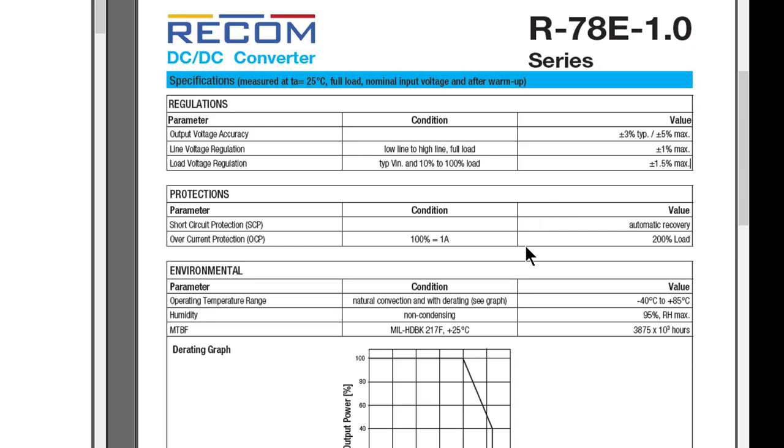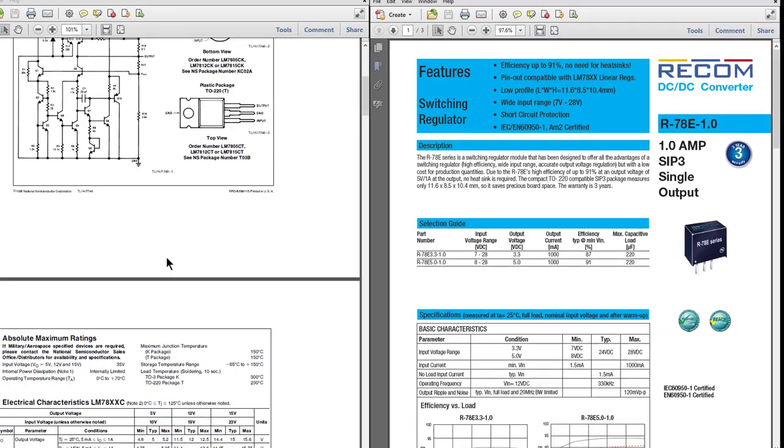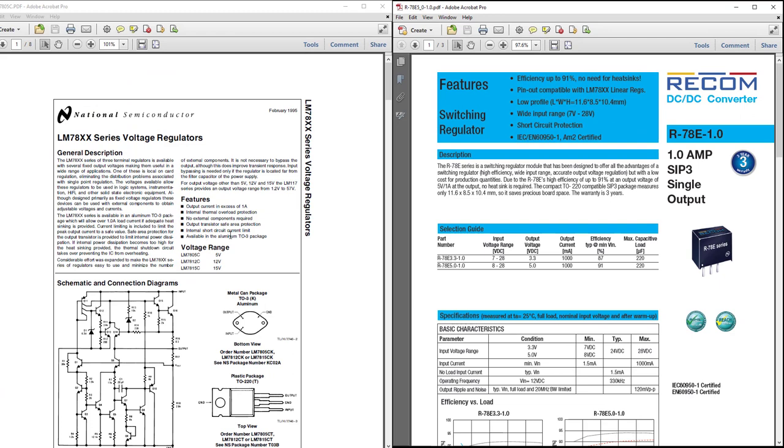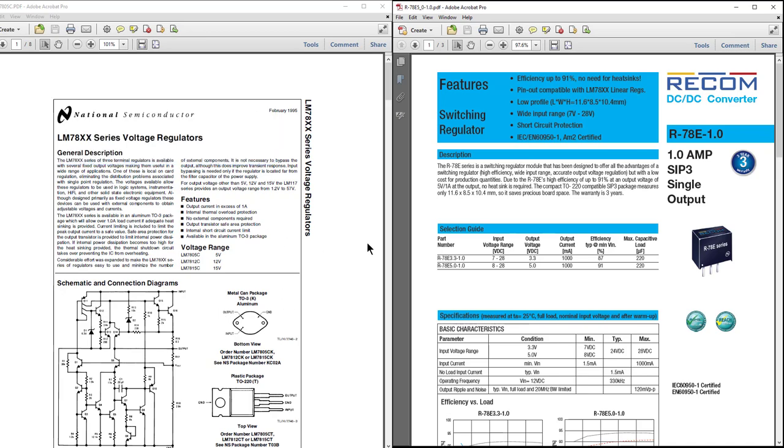So unless you have a circuit that can't tolerate any kind of ripple, the Recom is definitely the way to go as far as efficiency. So it has a greater efficiency, but more ripple and the 7805 is far less efficient, but it pretty much has no ripple at the output at all. With all of that covered, let's run some current through both of these components and see how they compare.